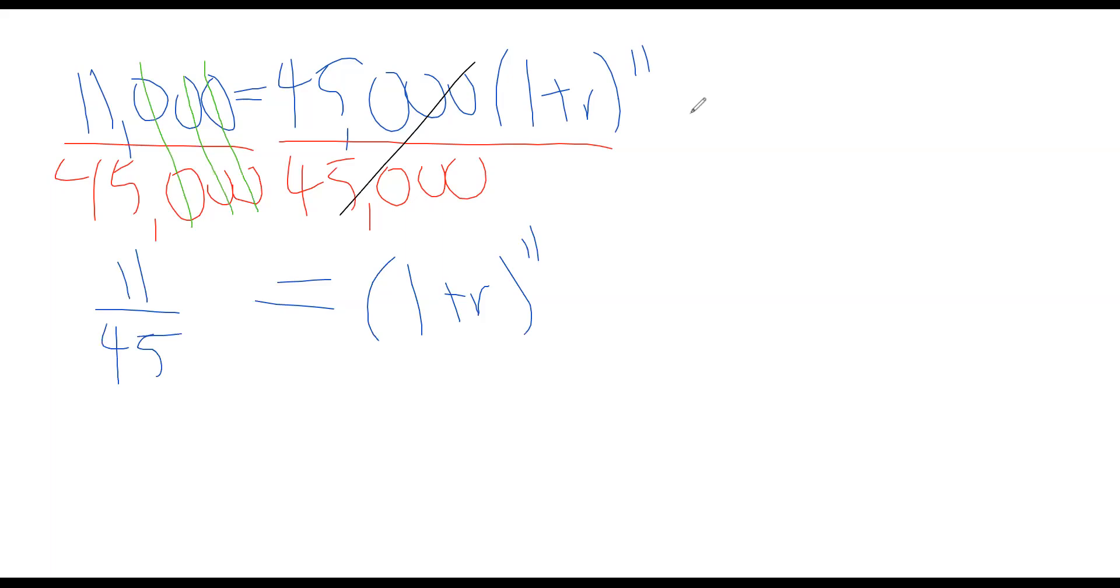And then we need to solve for R, keep isolating the R over here. And notice that the R and the 1 are inside of parentheses being raised to the 11th power. So to solve for this, what we have to do is use inverse operations and do the 11th root on each side.